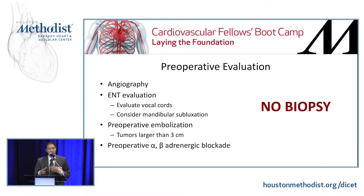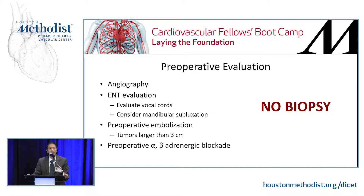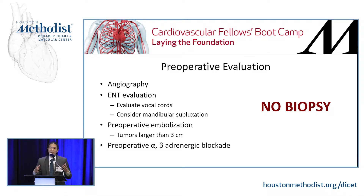For preoperative evaluation, angiogram has classically been described as the gold standard but has largely been replaced by CTA and MRI. ENT evaluation is useful if there's prior head and neck surgery or concern about vocal cords, or if considering submandibular subluxation for a particularly high or large tumor. Preoperative embolization is generally accepted for tumors 3 centimeters or larger. If the tumor is vasoactive, consider preoperative alpha and beta-adrenergic blockade. Importantly, do not biopsy — these are hypervascular tumors, and you risk bleeding without gaining diagnostic benefit.